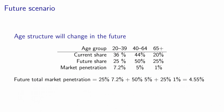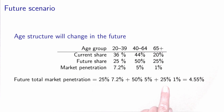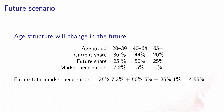So from these numbers, knowing the market penetration per age category — which is given by the model — we can actually predict the future share of electric cars in the population by doing the exact same calculation as for the current scenario. We have 25% times 7.2%, 50% times 5%, and 25% times 1%. All together, we get a future market share for the electric car of 4.55%.